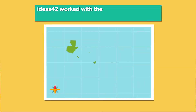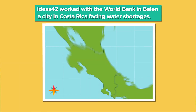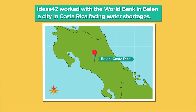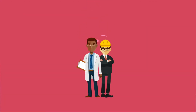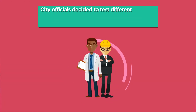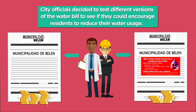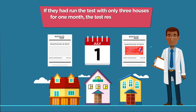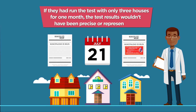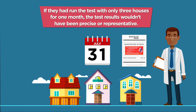For example, a couple of years ago, Ideas42 worked with the World Bank in Belén, a city in Costa Rica facing water shortages. City officials decided to test different versions of a municipal water bill to see if they could encourage residents to reduce their water use. But how many households should they include in the A-B test, and for how long? If they had run the test with only three houses for one month, the test results wouldn't have been precise or representative.